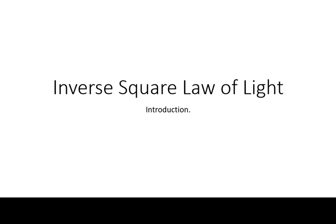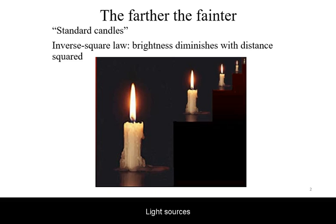This is an introduction to the theoretical treatment of the inverse square law of light. Light sources farther away appear dimmer. The inverse square law says that the brightness is inversely proportional to the distance squared.